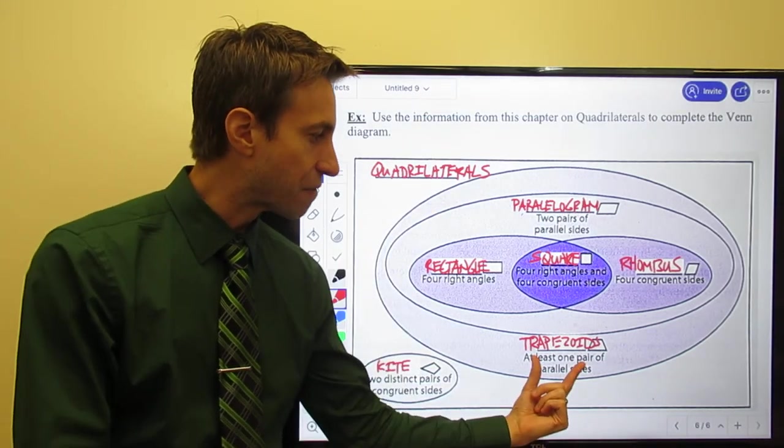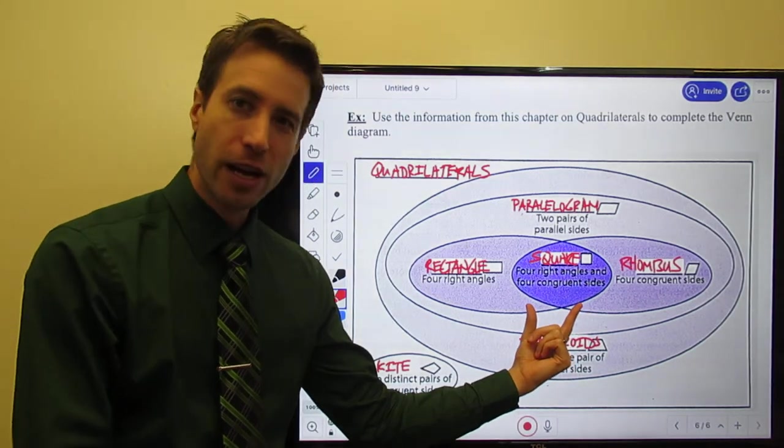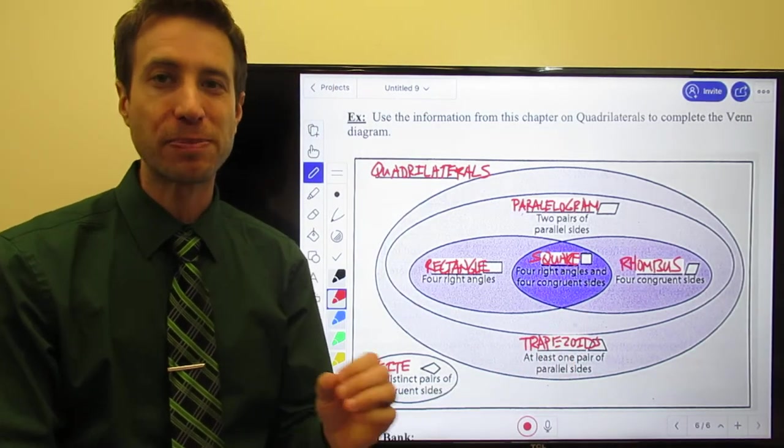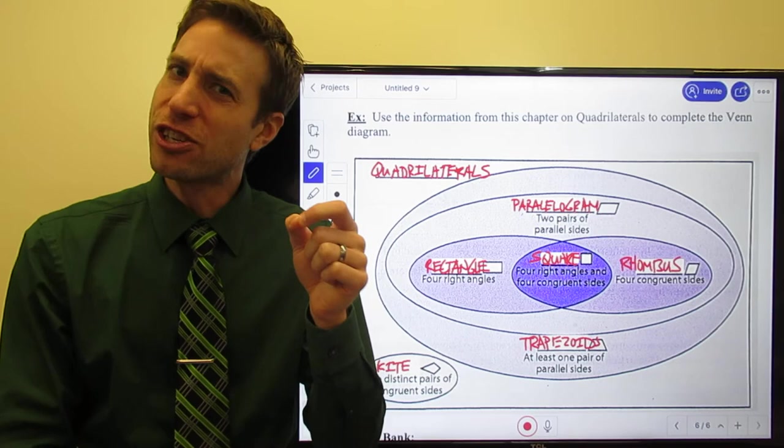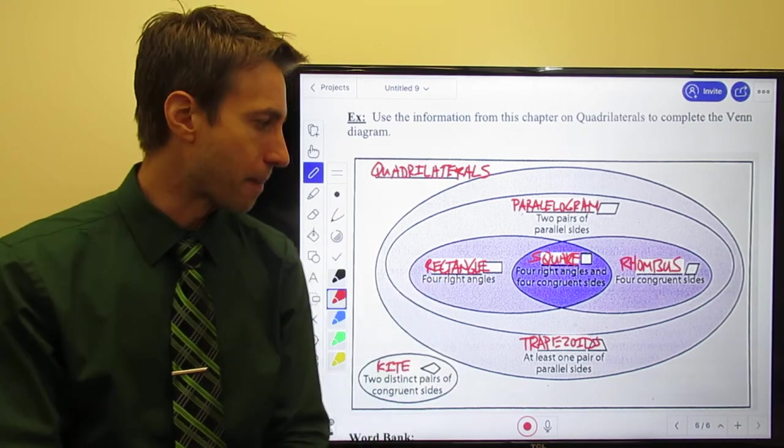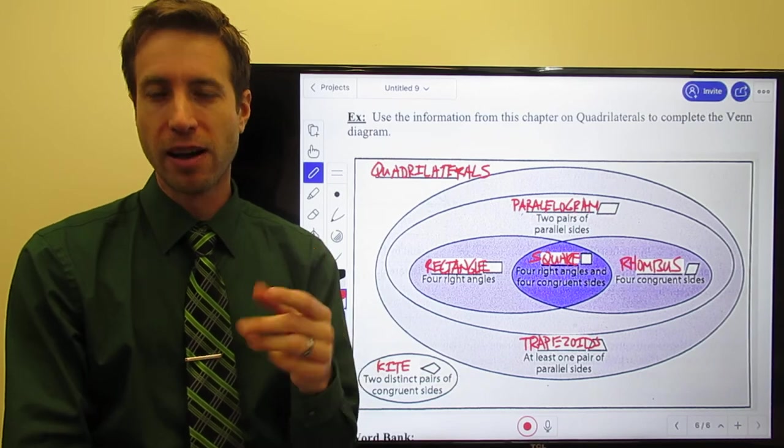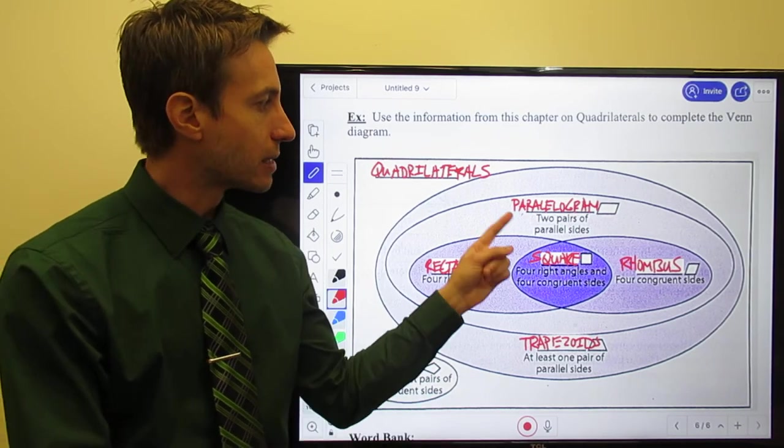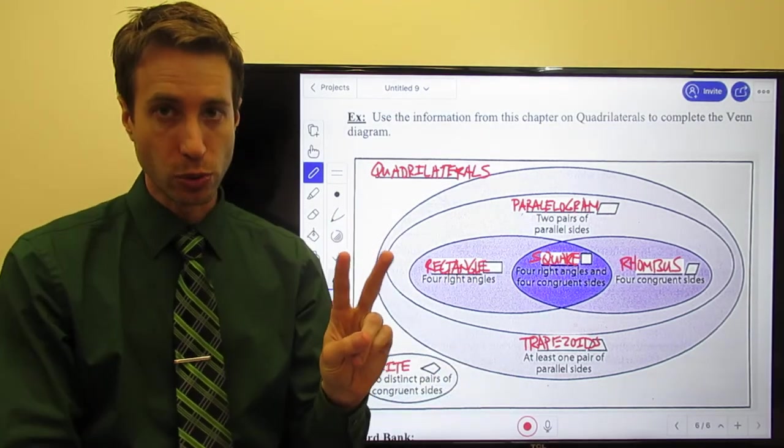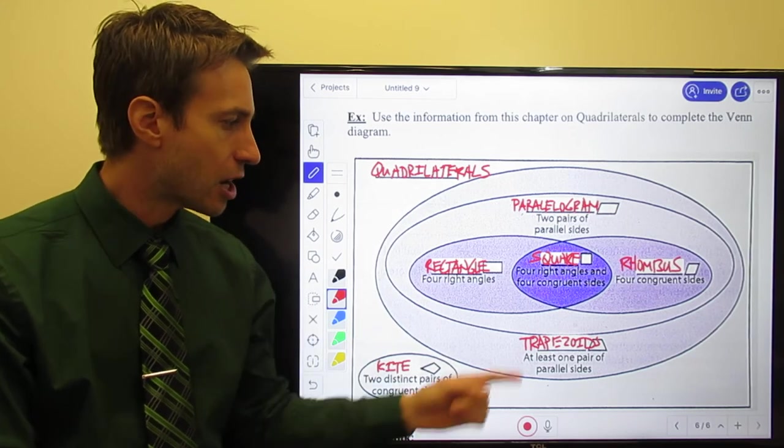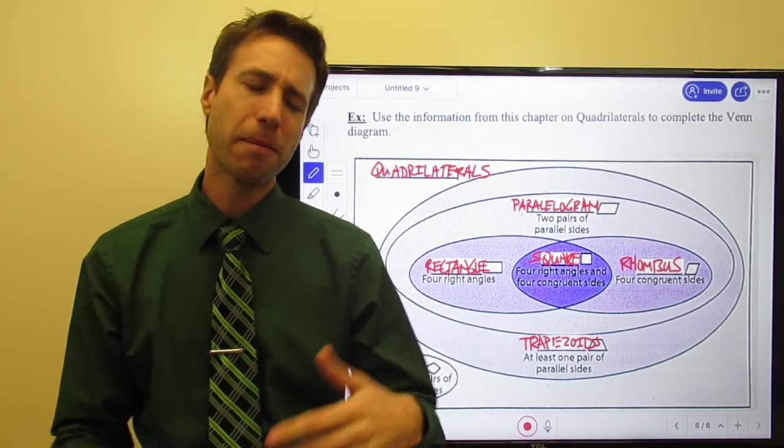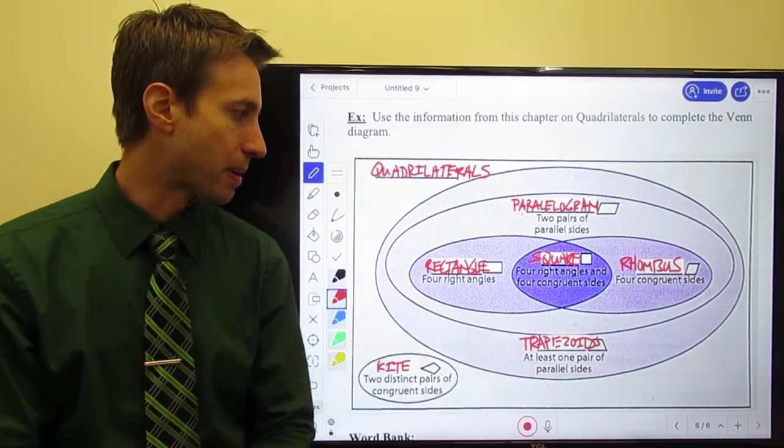But the reason the trapezoid doesn't fall inside the circle for my parallelograms is because it's close, but it's not quite a parallelogram. Remember, the trapezoid only has one pair of parallel sides, whereas a parallelogram must have two pairs of parallel sides. That trapezoid's really close, but it's not quite there to being a parallelogram.